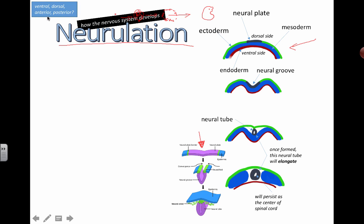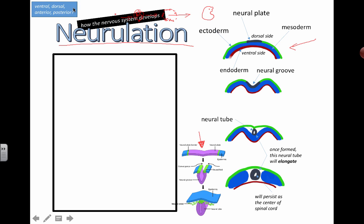Anterior is kind of like the head of something. The posterior is the butt, it's a fancy way. Posterior is the butt of something or the end of something. Ventral is kind of the front. So the ventral would be my tummy side and the dorsal side would be the back.